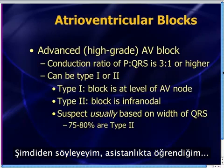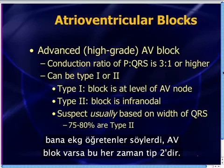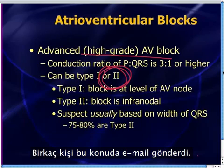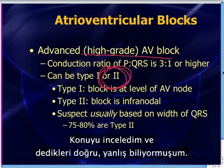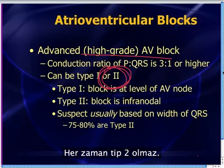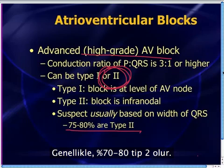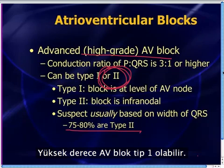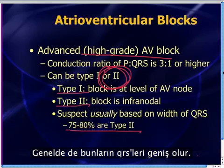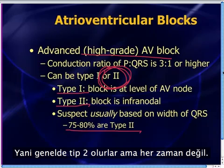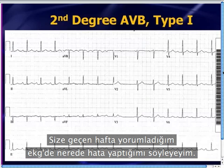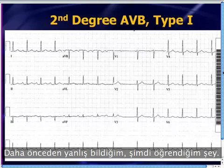What I learned in residency was that when you have high-grade AV block, they're always type 2. That's not correct. A couple of people emailed me about this, I looked it up, and they are right — I was wrong. They are not always type 2. Usually 75 to 80% of the time they are type 2, but not 100%. You can have a high-grade AV block that is type 1 — usually with narrow QRS complexes. And you can have a high-grade AV block that's type 2 — usually with wide QRS complexes.